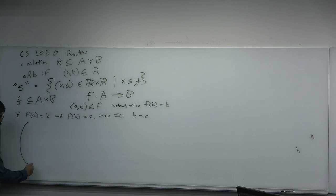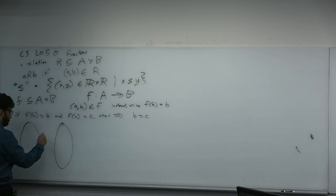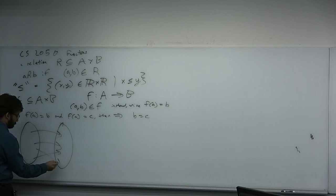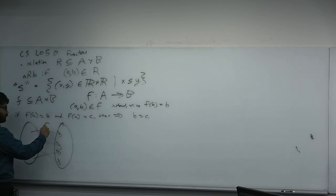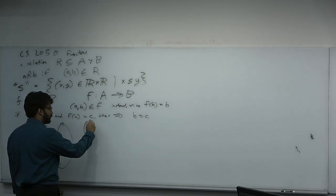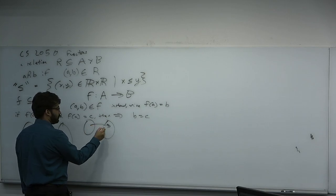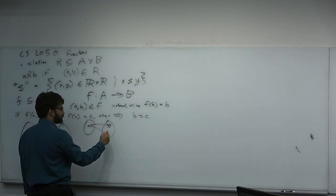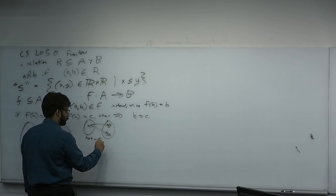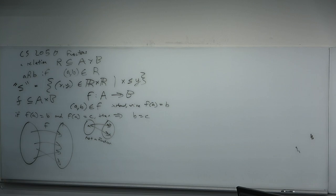You may have seen a function written with a diagram. This is a function. But implicitly, when a relation is not a function, if you see a picture where a single value A maps to two distinct values B and C, that's not a function. A single value mapping to two distinct values is not a function. Although a function can be defined as a subset of a Cartesian product, think of it as an input and an output — you take something and map it to something.